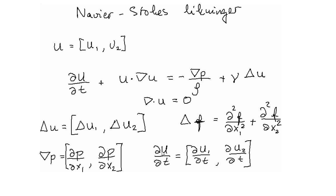Moreover, the partial derivative of the vector u with respect to time is defined as the partial derivative of the first variable u1 with respect to time t, and the second component of this vector is the partial derivative of u2 with respect to time t.